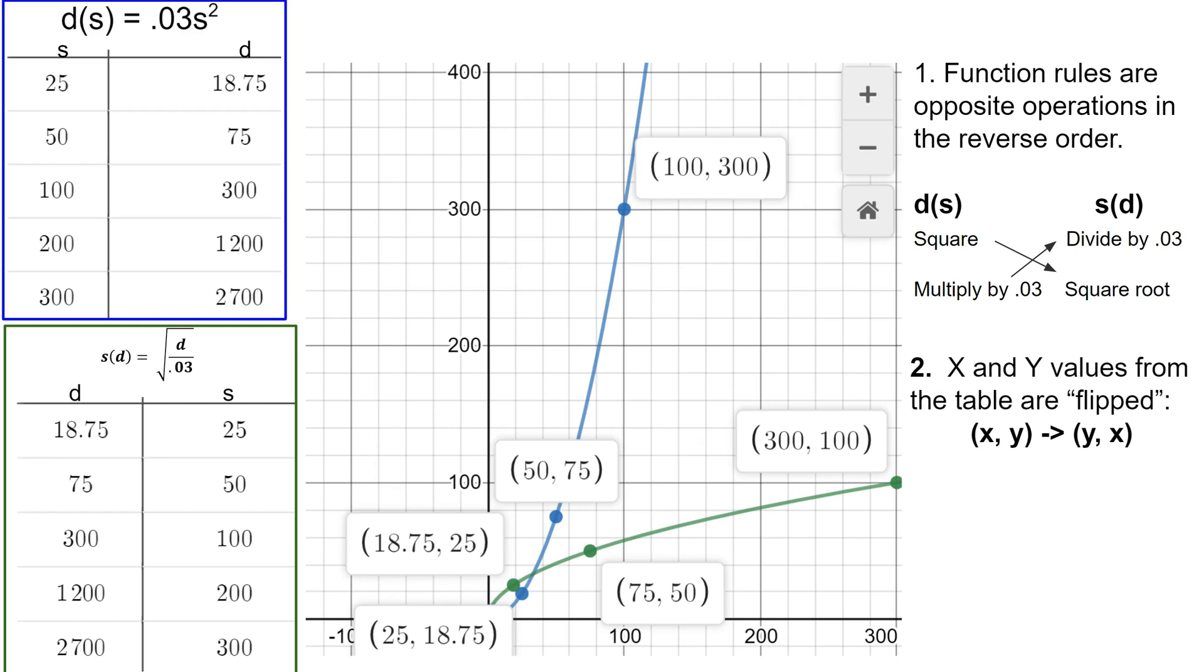Similarly, as I've already mentioned, you can see from the table that the x and y values are flipped. So another example, 100, 300 in the blue function became 300, 100 in the green function.